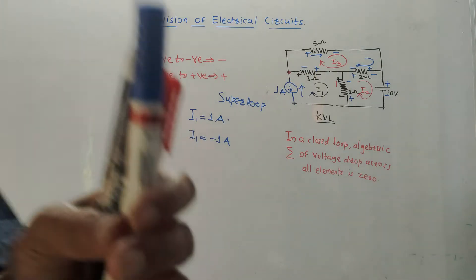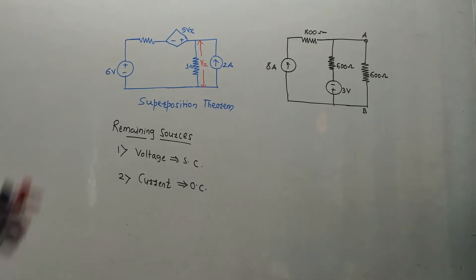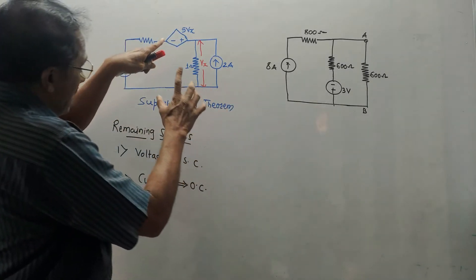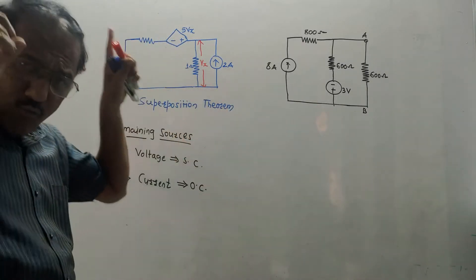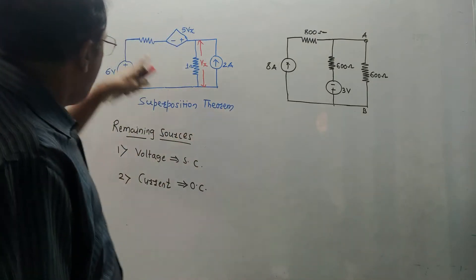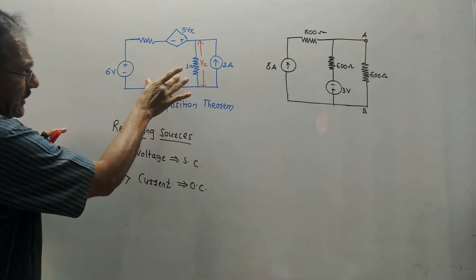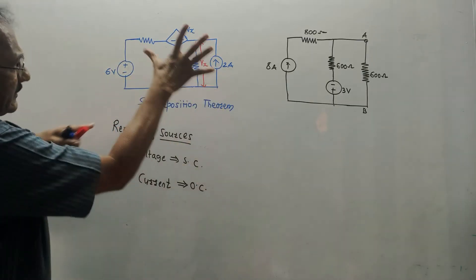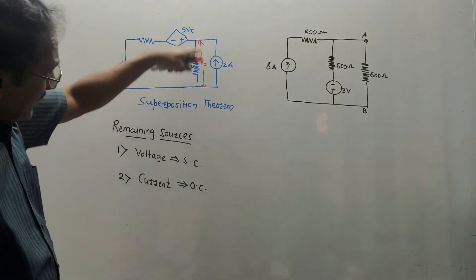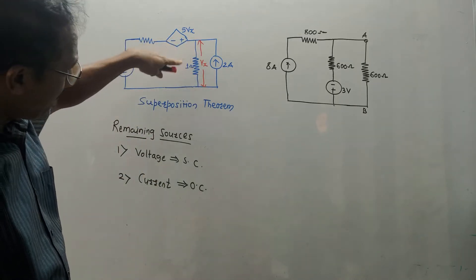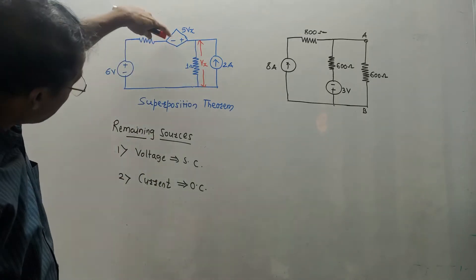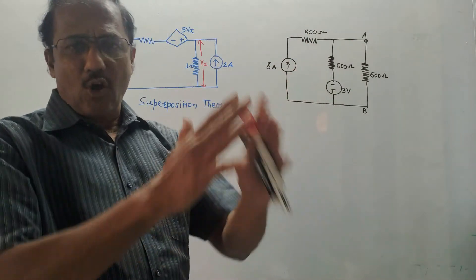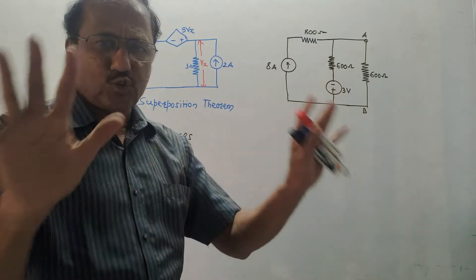Next topic is network theorems. The first is the superposition theorem. In superposition theorem, you consider one source at a time. The diamond-shaped symbol represents a dependent source — always keep dependent sources as they are.